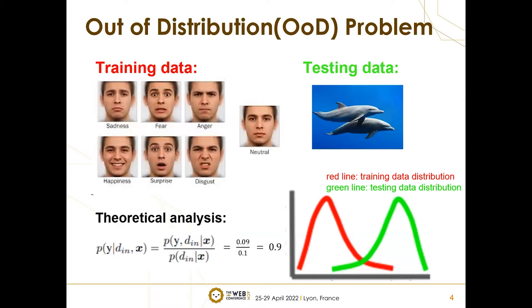OOD problem means out-of-distribution problem. It refers to the testing data being inconsistent with the training data distribution. For example, suppose that a model is trained to classify human emotions through facial expressions with some training data like this.